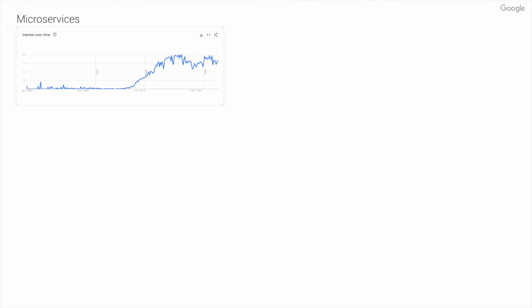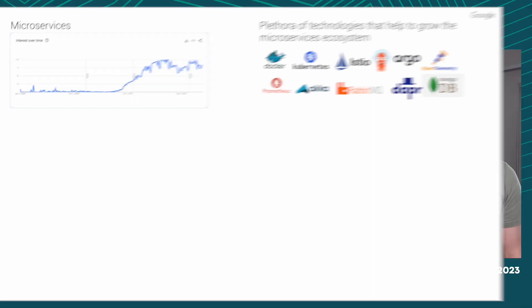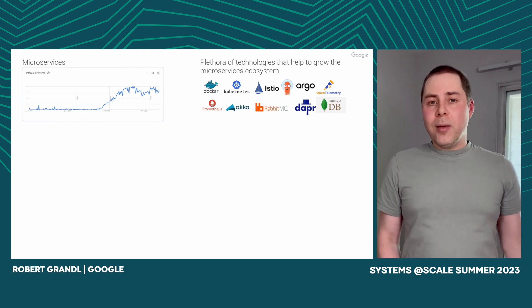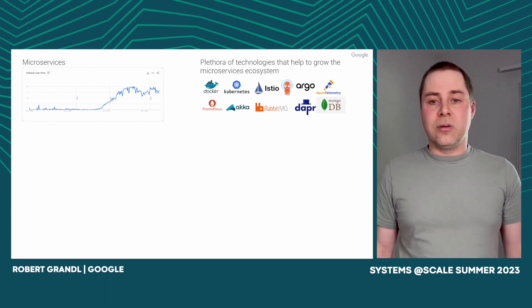For example, here on the left, if you look at the interest over time, you see that microservice-based applications just became a thing — everyone wants to write microservices-based applications and the trend keeps going. As a community, we've been developing a lot of technologies that help grow the microservices ecosystem further: Docker and Kubernetes for flexible and easy deployments, service meshes like Istio for connecting microservices, CI/CD pipelines like Argo, OpenTelemetry, Prometheus, and Jaeger for observability.